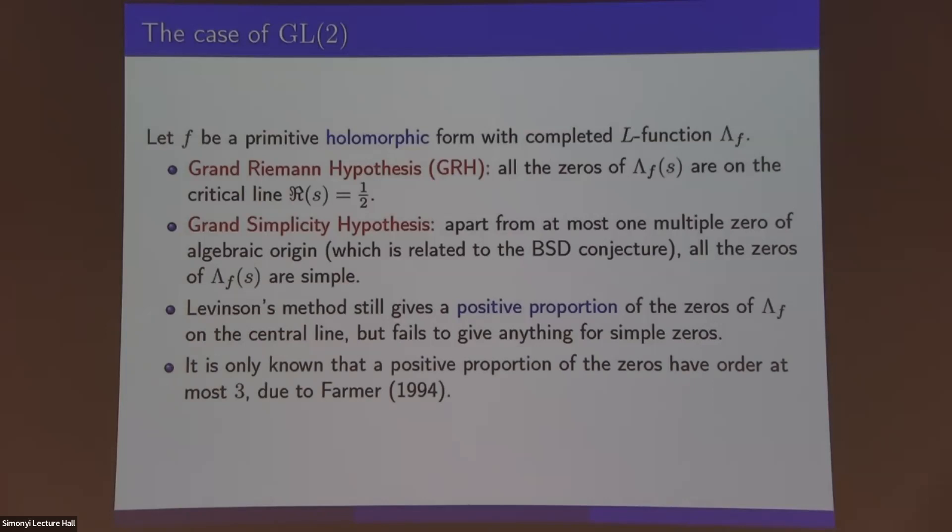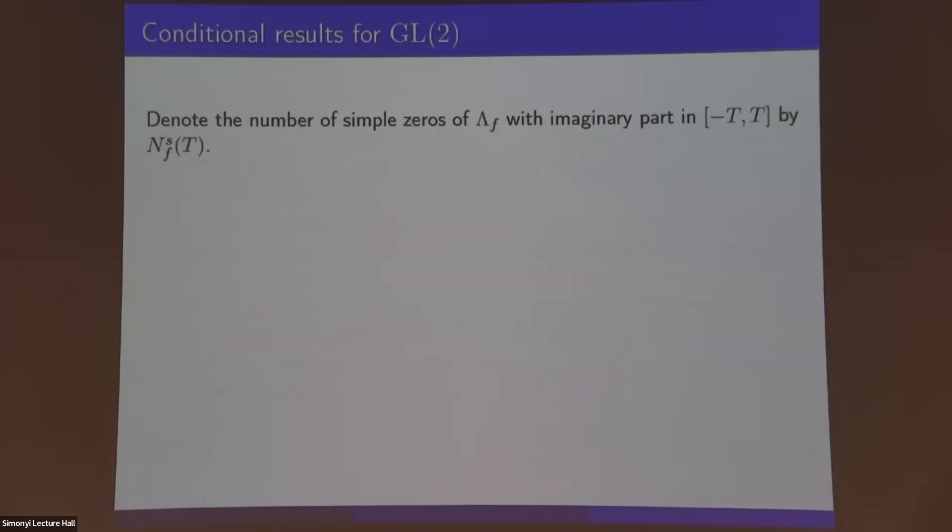So this seems potentially hard. Let's give ourselves some leeway here. What can we say conditionally? I will tell you what conditional means. But first, let's establish a little bit of notation. So this will be the last piece of notation for the talk. The number of simple zeros of our L-function with imaginary part in minus T to T will be denoted by N_S^f(T). S for simple, f is for form. So that's the number of simple zeros with height at most T. We want to understand this function. We expect essentially all of the zeros or maybe perhaps all but one of the zeros to be simple. You can easily compute asymptotically the total number of zeros up to height T. So we expect an expression of this form.